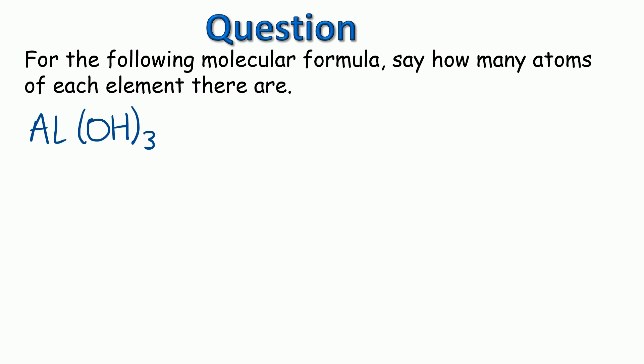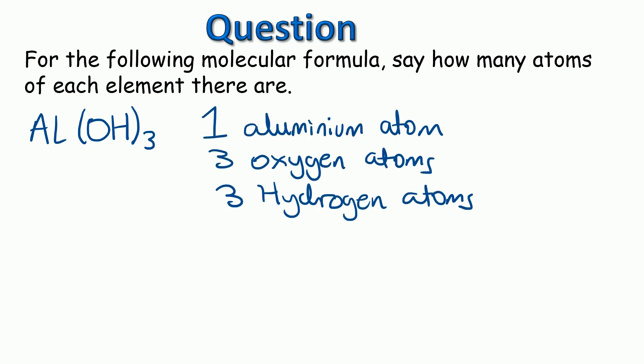Okay, let's see how you got on. So there's one aluminium atom, as there's nothing next to that. This time there's three oxygen atoms and three hydrogen atoms, because everything inside the brackets is multiplied by three this time. So if you're struggling, think of it like this, AL, and then we've got three lots of OH, and now we can clearly see the three oxygen atoms and the three hydrogen atoms.